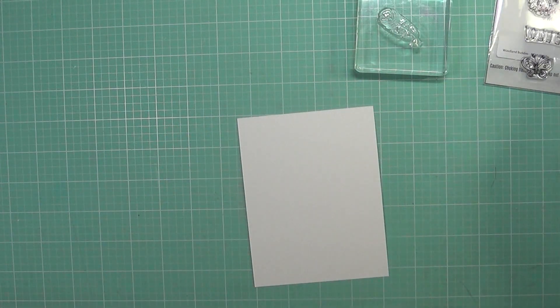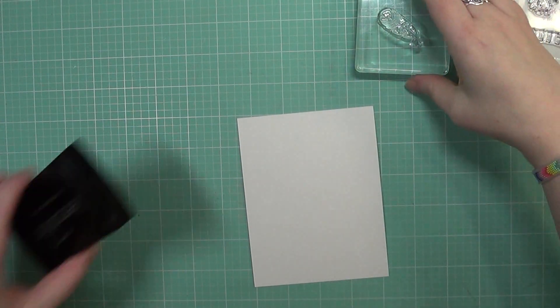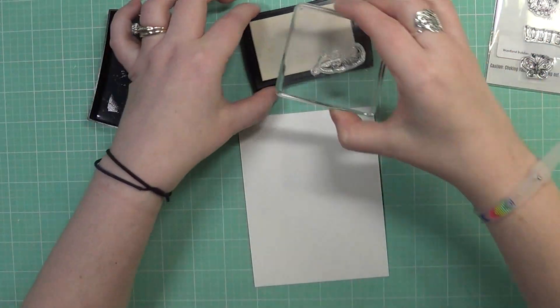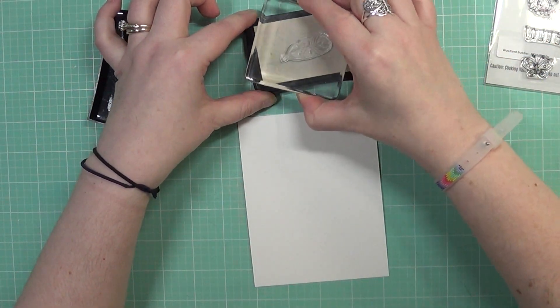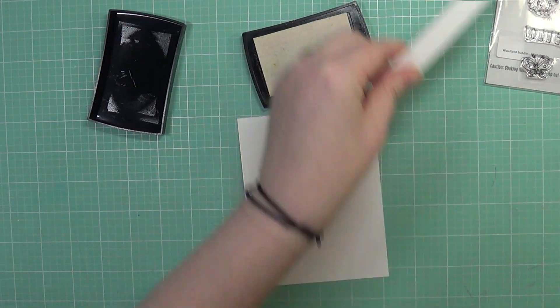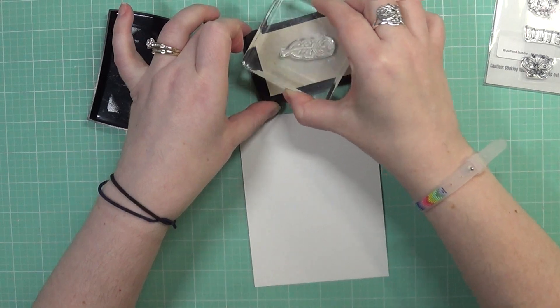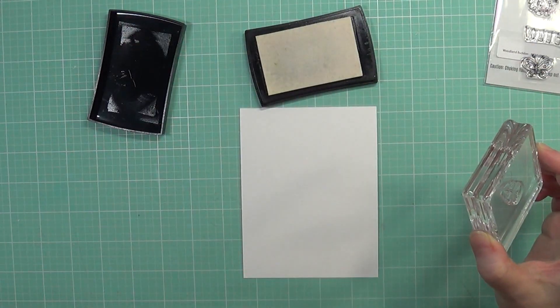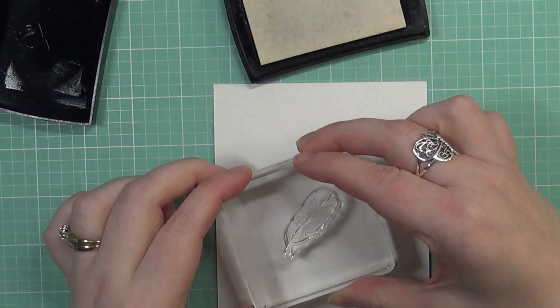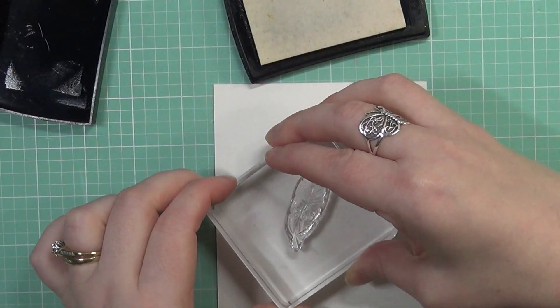Next I'm going to stamp this with some VersaMark ink. This is a really sticky ink, great for embossing, and I'm just going to essentially make my own pattern paper background. Since I've never stamped with this stamp before, I'm stamping it down once onto some scrap paper there. I'm going to zoom you in here just a little bit to show you a closer look at what I'm doing.